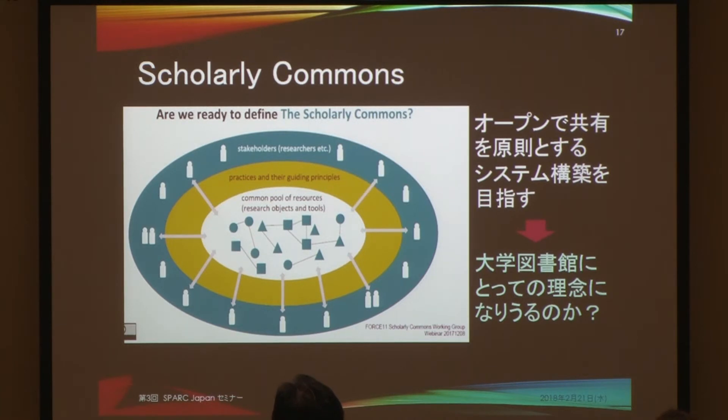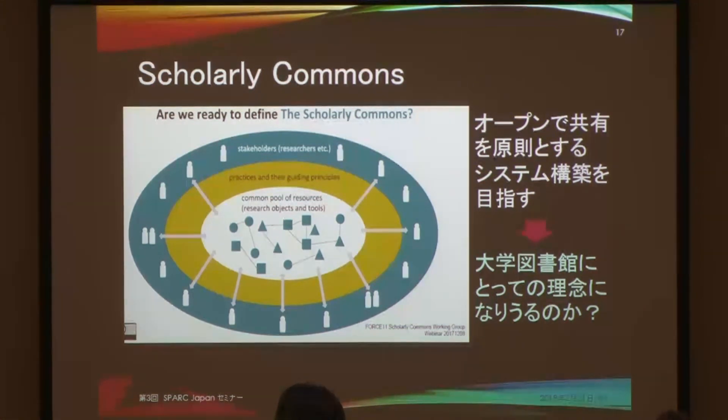Maybe we can pay more attention to the total difference in the system. One interesting idea, as a movement, is what we call the Scholarly Commons. This consists of many different materials, tools, and everything — every one of these things is going to be shareable in principle. Educators, researchers, and publishers will share this important baseline idea. Of course it is not just limited to this, and even in a mixture, it has got to be on the closer side of openness. Some movements are underway in what they call the Scholarly Commons.